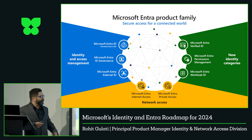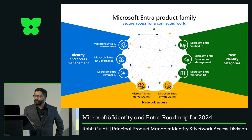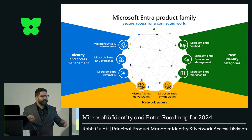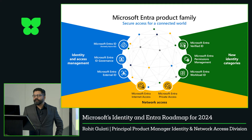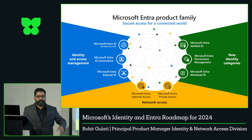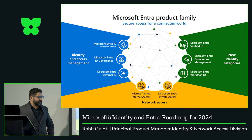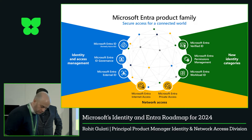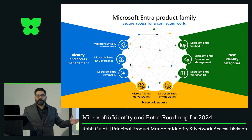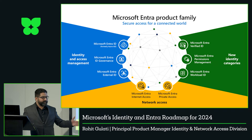We also have a new category called network access, which is Microsoft's entry into the security service edge offering — a category you hear about from analysts like Gartner. We have two products: internet access and private access. Internet access helps you secure traffic going to Microsoft 365 apps and SaaS apps like Salesforce or ServiceNow. Private access lets you implement a zero trust network access solution for line of business apps, going VPN-less.